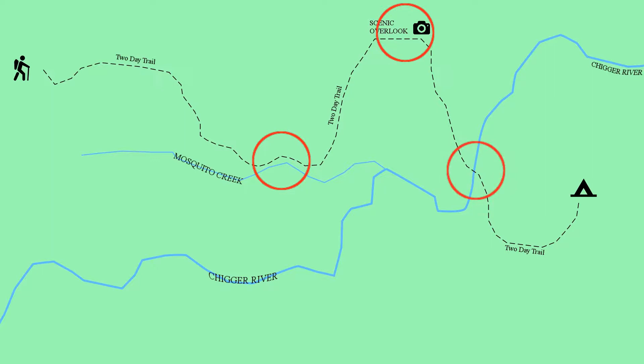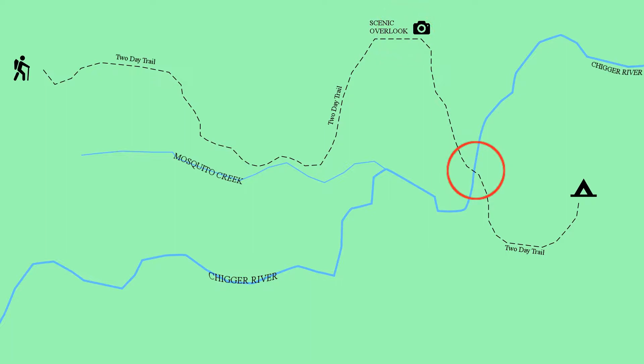This is pretty straightforward — using waypoints mostly as a psychological effect. Once you leave Mosquito Creek, you're about halfway there. The scenic overlook would be a great place to stop and have lunch. And when you cross the river, you know you're getting close to your campsite.